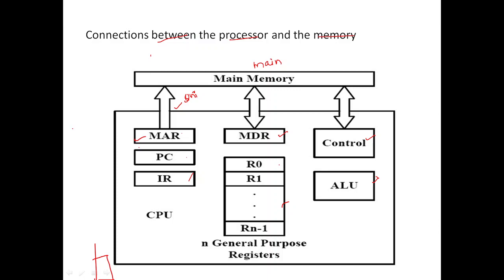The Program Counter holds the address of the next instruction to be executed. The Instruction Register holds the instruction that is currently being executed by the CPU. We also have the Control Unit, the ALU, and general purpose registers R0 through R(n-1).